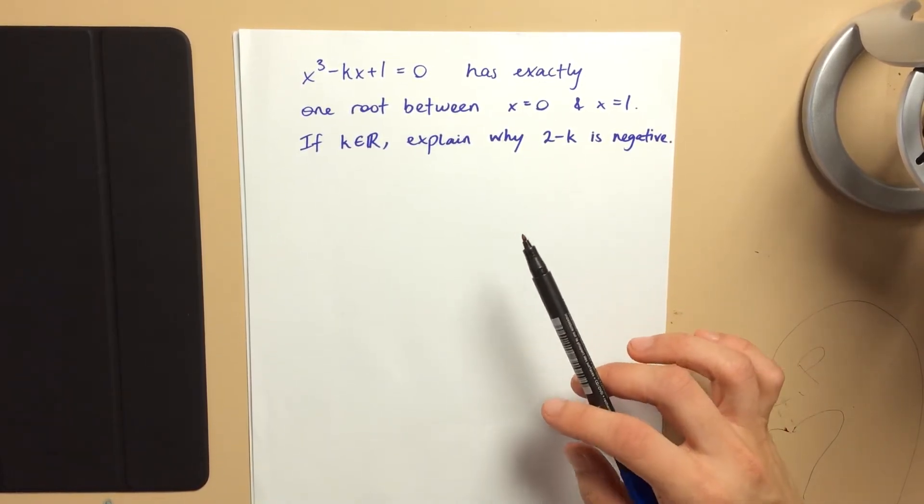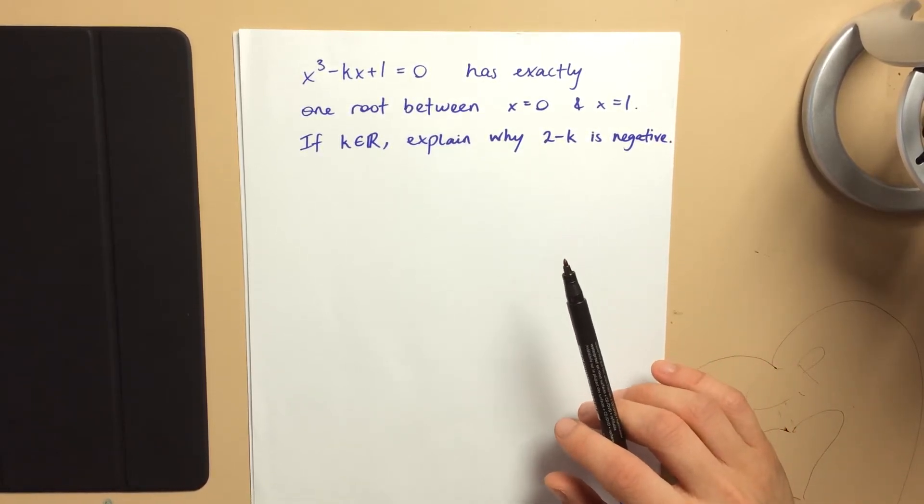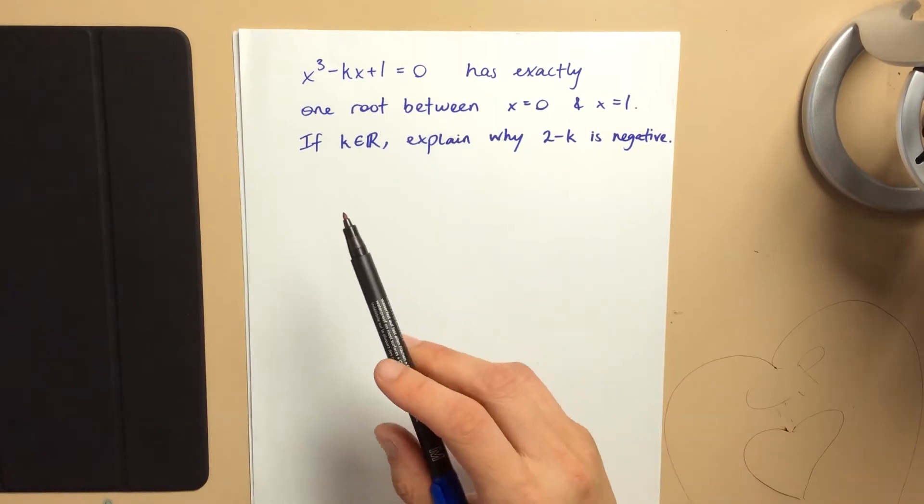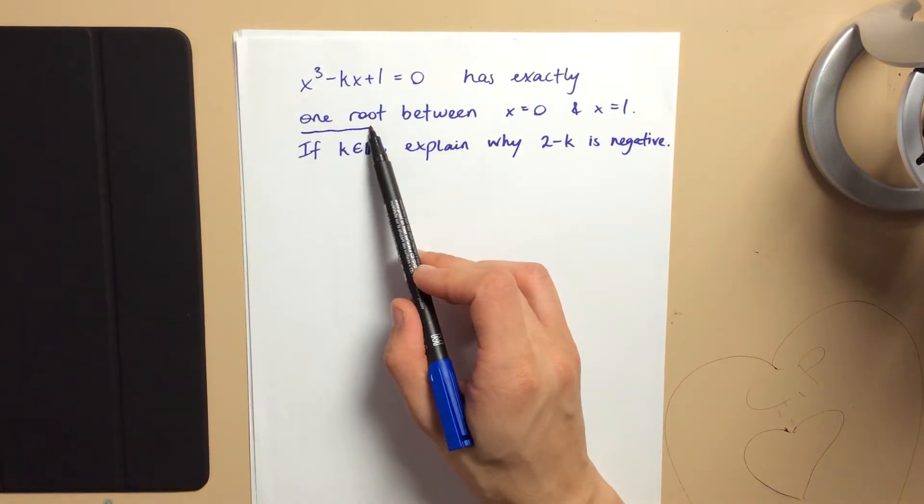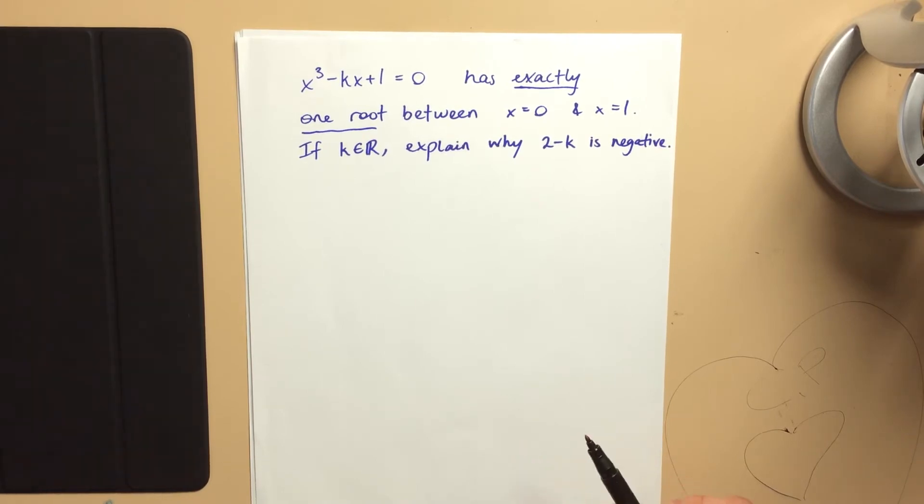Now, this is an interesting question because at the beginning you think, how do I even start? What kind of way can I approach this? And you might think, what information does that tell you? Well, there's exactly one root. So that might tempt you to think it might have something to do with the discriminant.